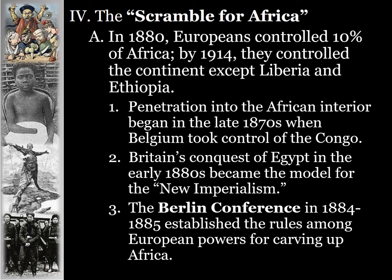The Berlin Conference in 1884 and 1885 established the rules among the European powers for carving up Africa. It was essentially a summit meeting with world leaders from all over Europe, with a big map of Africa, where each nation stated which areas they would claim. Nobody from Africa was invited to this conference — the local populations were not even considered.